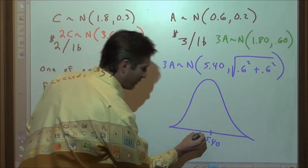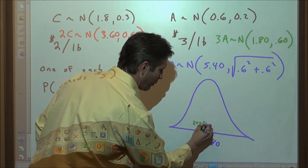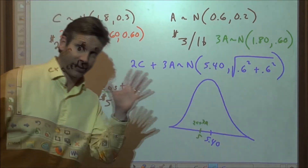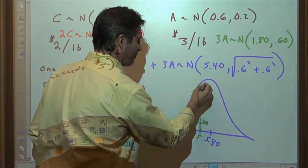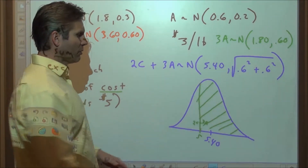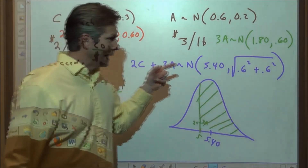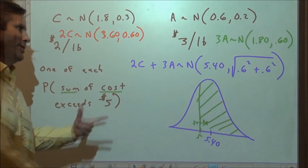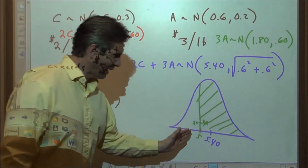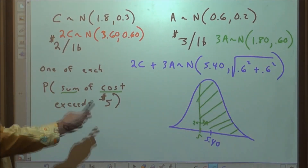We've got an average total cost of $5.40, and we want to find the probability that the sum of our costs exceeds $5. On this joint distribution, the new standard deviation is the square root of 2 times 0.6, which is about $0.85. We'd find a Z-score, use normal CDF from $5 to a very high number with mean $5.40 and standard deviation approximately $0.85, and that gives us the area under the curve.